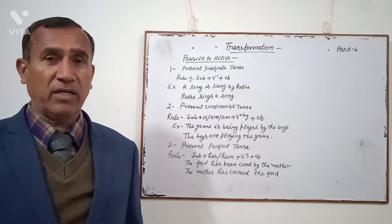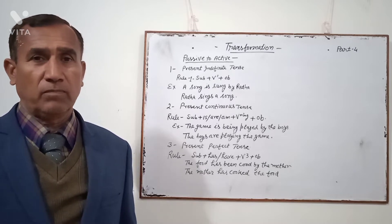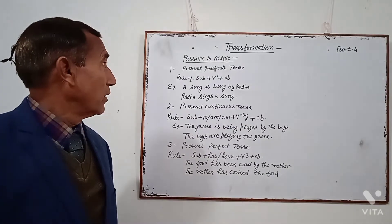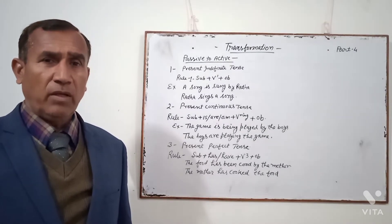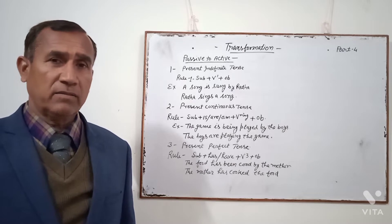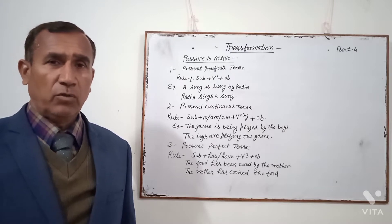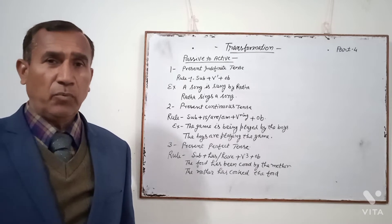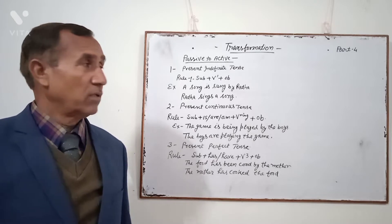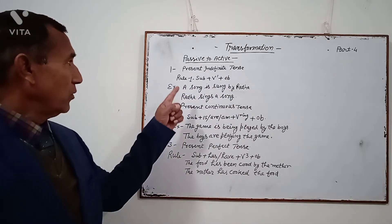The word 'by' is not used in Active voice. Now, Passive to Active: first tense — Present Indefinite. If the sentence is in Passive voice and it is in Present Indefinite tense, to change it into Active we apply the rule of Present Indefinite tense. For example: 'A song is sung by Radha.' Now we apply the rule: Subject + V1 + Object.